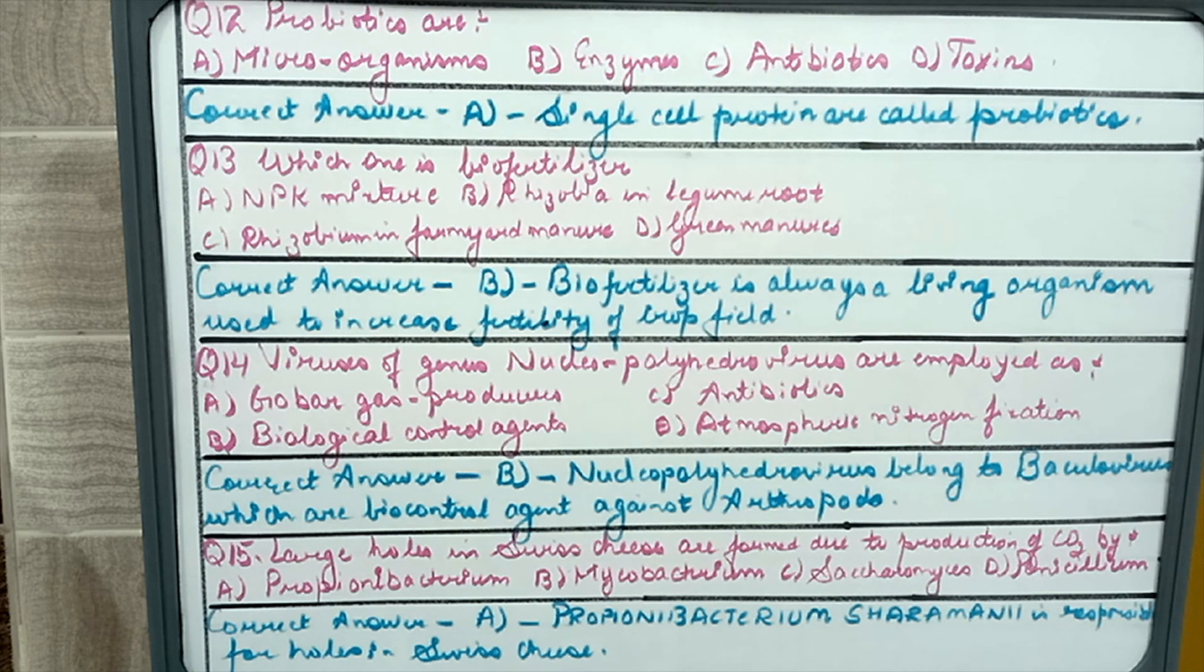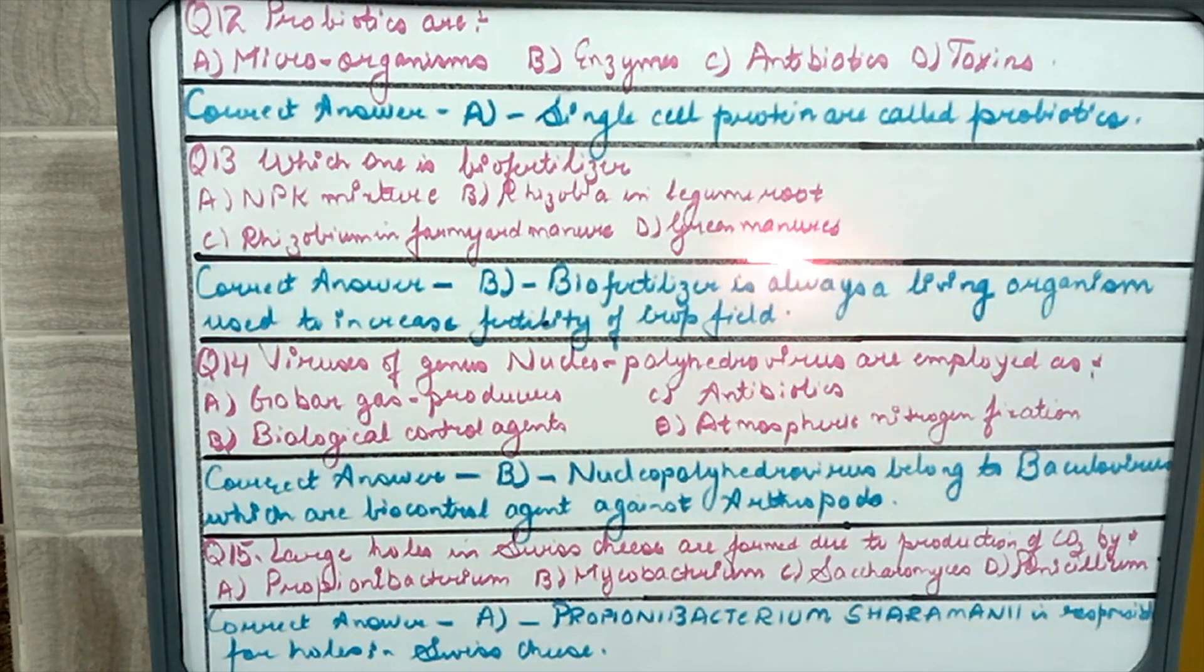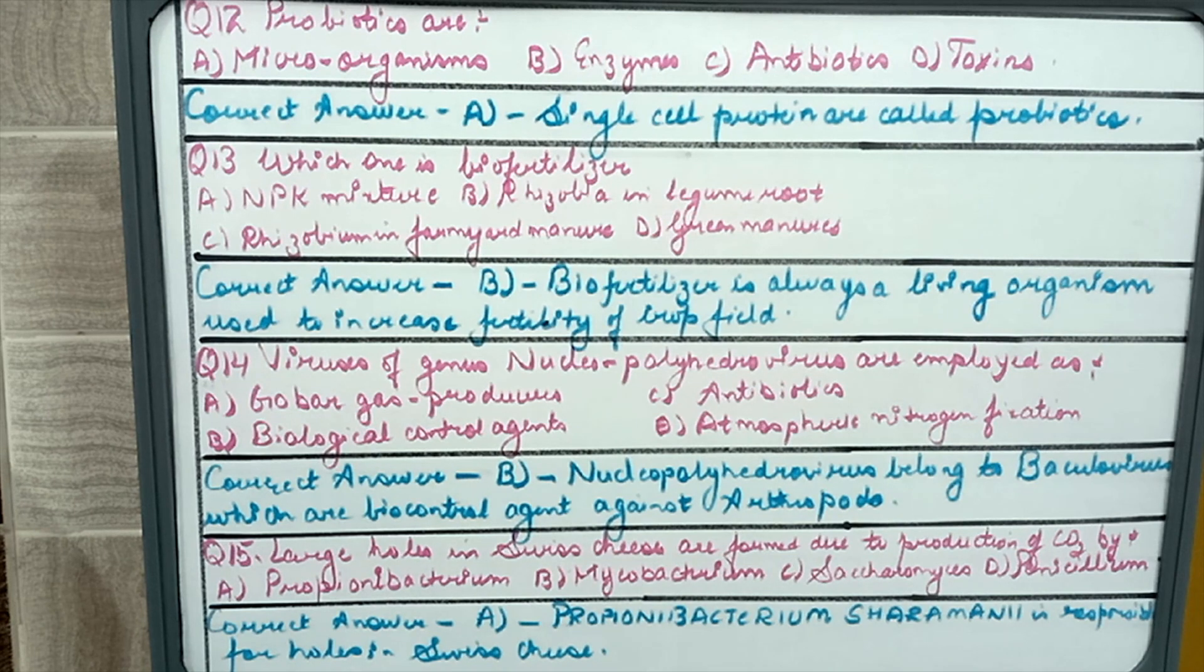Question 14: viruses of genus Nucleopolyhedrovirus are employed as gobar gas producers, biological control agents, antibiotics, or atmospheric nitrogen fixation. If we have studied NCERT carefully we know that Nucleopolyhedrovirus, in this we have Baculovirus and Baculovirus is a biological control agent which is used against arthropods.